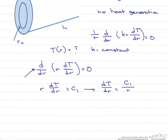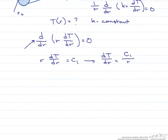Let's integrate this again. We're left with T(r) equals c1 times the natural log of r plus c2. So we have a temperature distribution. However, in order to be able to apply it, we need to solve for these constants.